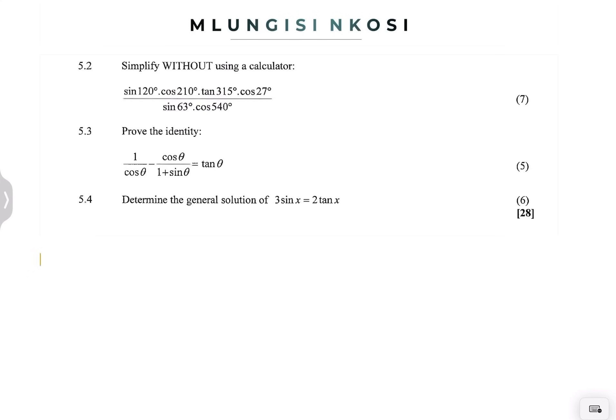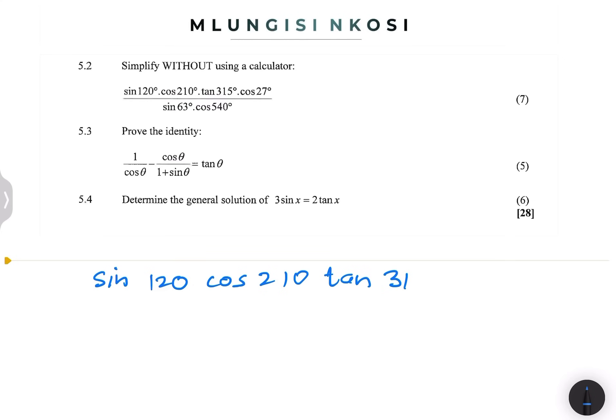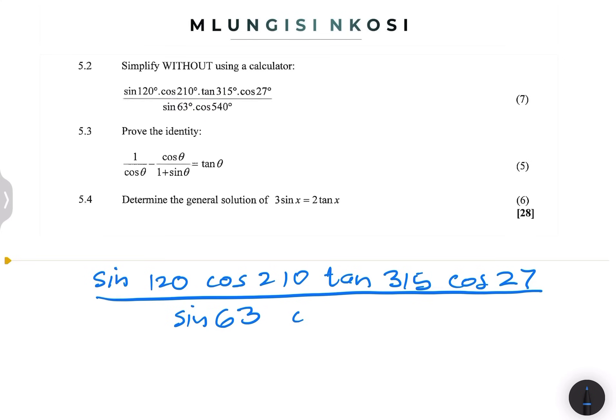Let's dive into question 5.2. What I'll do is address the other questions in the next video. But I want us to look at simplifying without using a calculator. And of course, we're going to be applying some special angles. So we're given: sine of 120, cos of 210, tan of 315, cos of 27, divided by the sine of 63 and the cos of 540.